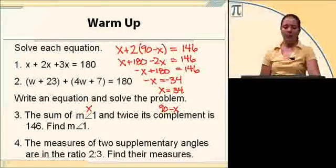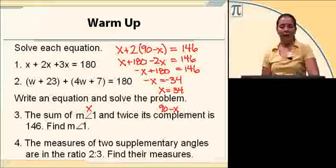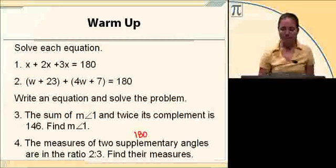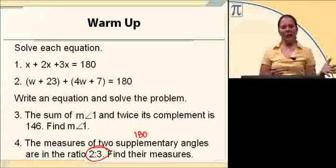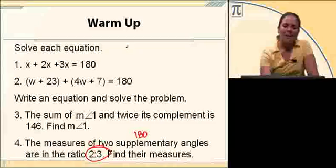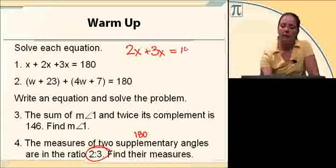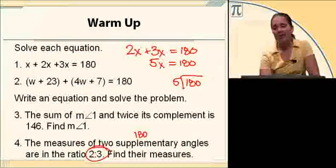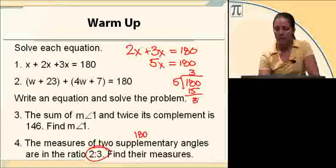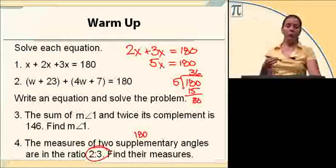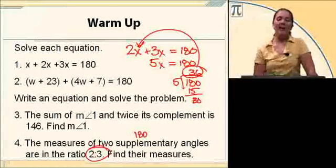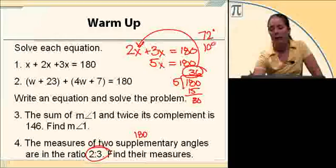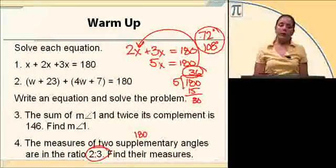Number 4, the measures of two supplementary angles are in the ratio of 2 to 3. Find their measures. Supplementary angles add to get 180. With a ratio of 2 to 3, one is twice a value and the other is three times that same value. Setting up the equation: 2x plus 3x equals 180, so 5x equals 180, and x equals 36. The two angles are 2 times 36, which is 72 degrees, and 3 times 36, which is 108 degrees.